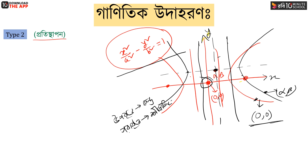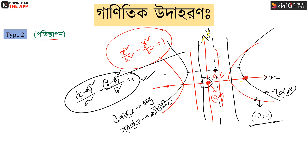The center is going to shift to (alpha, beta), and you can see the same thing as: (x - alpha)² divided by a² minus (y - beta)² divided by b² equal to 1. When (0, 0) is not a point of shift.